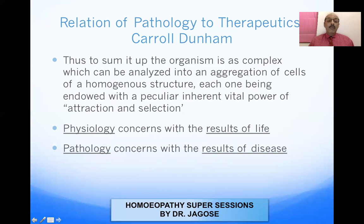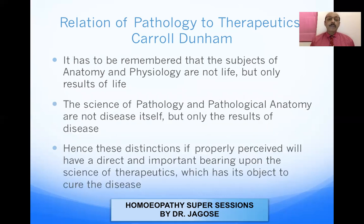To sum it up, the organism is a complex which can be analyzed into an aggregation of cells of homogeneous structure, each one endowed with a particular inherent vital power of attraction and selection. Physiology concerns the result of life, and pathology concerns the result of disease. The subjects of anatomy and physiology are not life itself but only the result of life; pathology and pathological anatomy are not disease itself but only the result of disease. This distinction has a direct bearing upon the science of therapeutics, which has its object to cure disease.